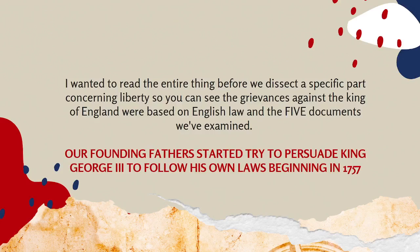'He has erected a multitude of new offices and sent hither swarms of officers to harass our people and eat out their substance. He has kept among us in times of peace standing armies without consent of our legislatures. He has combined with others to subject us to a jurisdiction foreign to our constitution, giving his assent to their acts of pretended legislation — for quartering large bodies of armed troops among us, for cutting off our trade, for imposing taxes without our consent, for depriving us in many cases of the benefits of trial by jury.' A prince whose character is marked by every act which may define a tyrant is unfit to be a ruler of a free people.